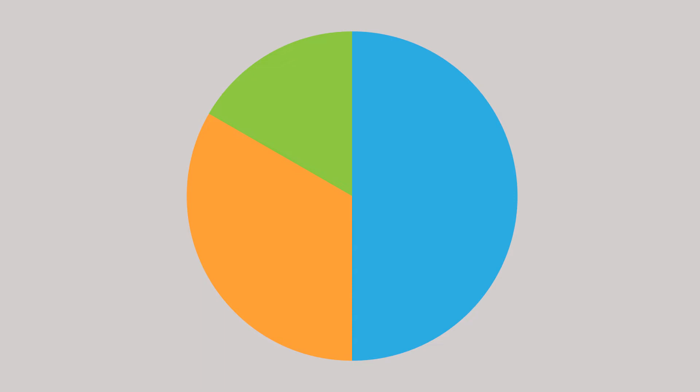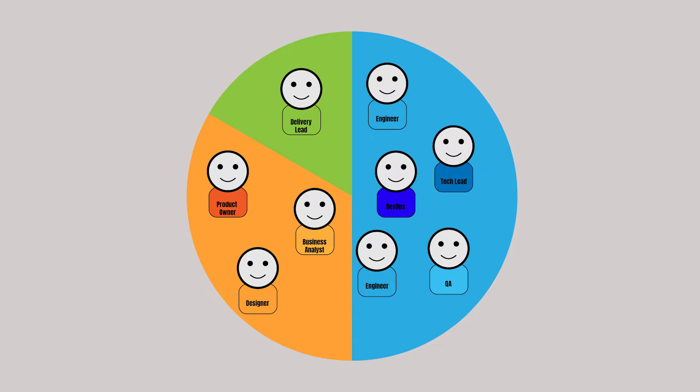Previously, we talked about the technical, product and delivery elements of an engineering team. We discussed how many people are in the technical team and what their role is, so now we need to understand exactly what they're doing and how each role fits into the wider team. The first role to understand is the tech lead, because they are the bridge between the engineers and the rest of the business.